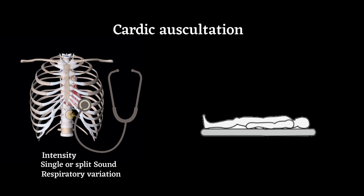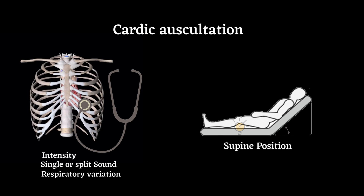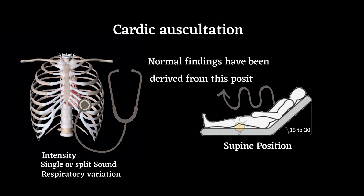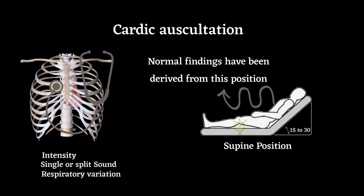Initially, auscultation should be conducted with the patient in the supine position, the head of the bed raised 15 to 30 degrees, and the diaphragm of the stethoscope pressed firmly against the chest wall. Normal findings have been derived from this position. All other positions are considered maneuvers to further identify cardiac pathology. Auscultation should proceed in a systematic fashion from either apex to base or vice versa.